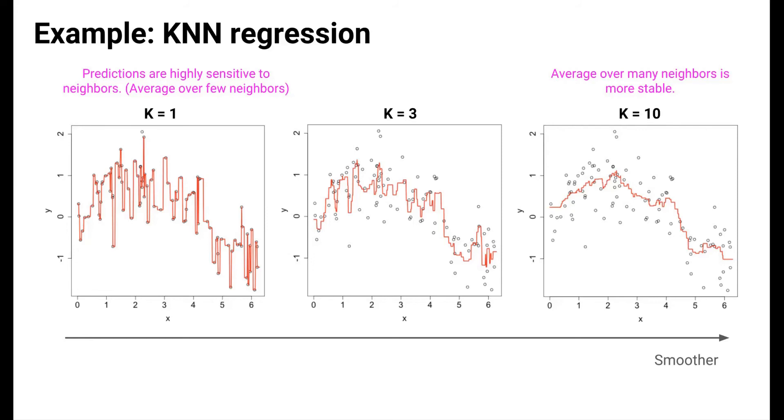This is similar to the idea that when we use high k in k-fold cross-validation, the error estimates in the iterations are highly variable. The high variability in the predictions for KNN regression decreases with higher k because we are now averaging responses for more neighbors and an average over more observations is more stable.